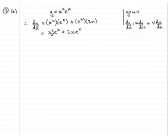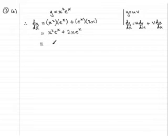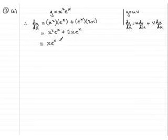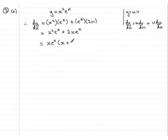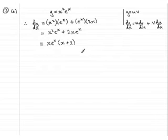If you wanted, you could factorize this one step further. x is a common factor, and so is e to the x, so we can have x e to the x, then open brackets, with an x inside, and then plus 2. Either of those two forms should do as a solution to part a.